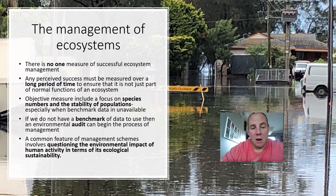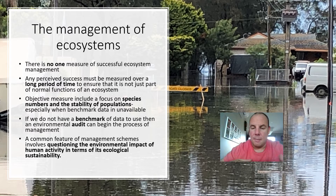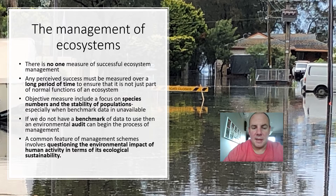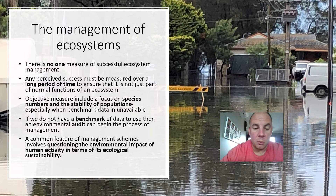Any success must be looked at over a long period of time, just to make sure it's not part of the normal function of an ecosystem. We can have populations of certain species in an ecosystem expand a lot, and that's natural and OK. That's why we've got to look at ecosystem management over time. We can focus on species numbers and the stability of populations, and if we don't have a benchmark, we start having an audit — counting species of animals and plants that are there.